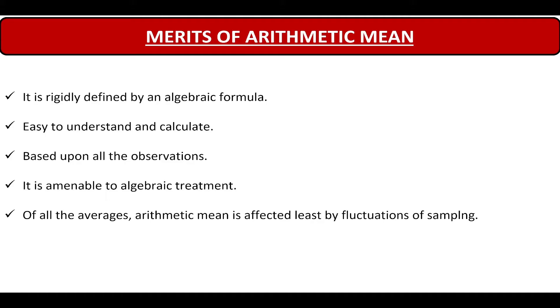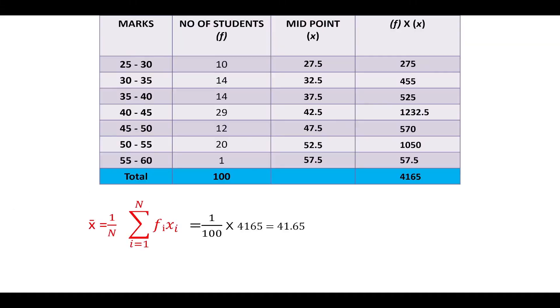And lastly, of all the averages, arithmetic mean is affected least by fluctuations of sampling. We can see that the value of mean that we obtain is not affected by the arrangement of values. You can move it anywhere up or down, but the value of mean will remain fixed. Whereas in case of median, you will need to arrange all the values in a particular order to get the value of median.